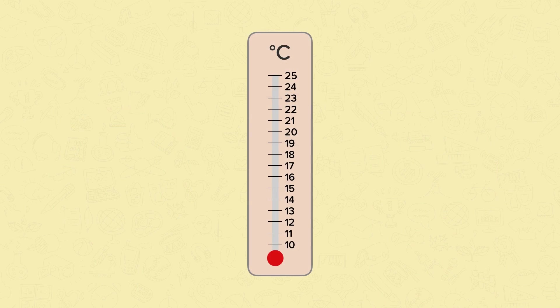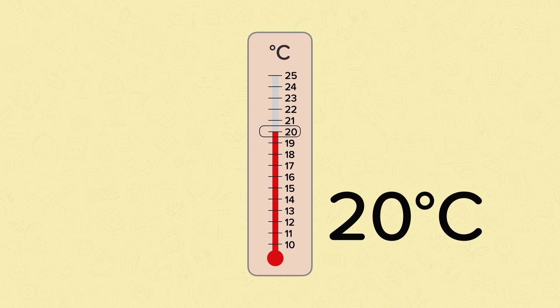Now let's look at a common thermometer like this one. This thermometer contains a special red liquid. The temperature affects how far the liquid travels up the thermometer. The hotter the temperature, the higher the liquid will rise. The red line has reached 20, so this thermometer shows that the temperature is 20 degrees Celsius.